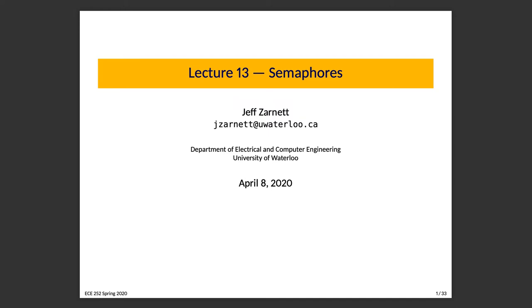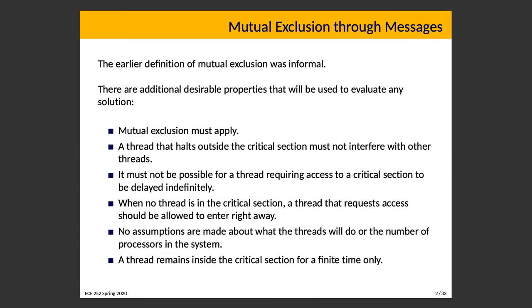I want to talk a little more about mutual exclusion in general. The previous definition was kind of informal — just that these things don't happen at the same time, like there's only one person skiing down the ski hill. A more formal definition is that events C and D do not happen at the same time. There are desirable properties of any mutual exclusion solution relevant to evaluating whether it is any good.